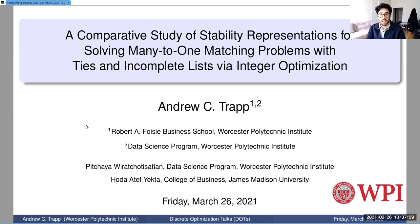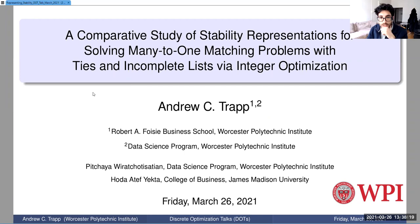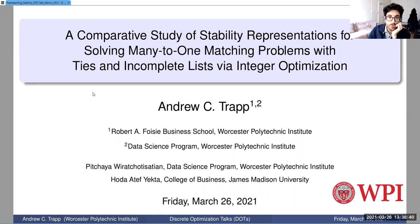Our second speaker for today is Professor Andrew Trapp from Industrial and Operations Engineering at the Western Polytechnic Institute in Massachusetts. He holds a PhD from the University of Pittsburgh and is known for his research at the intersection of operations research, analytics, and humanitarian systems, tackling problems such as refugee resettlement and countering human trafficking. His research has been funded by the National Science Foundation, and his work has appeared in venues such as Operations Research, INFORMS Journal on Computing, and EJOR. Today he's going to tell us about a matching problem which seems to arise repeatedly in these applications and how to tackle it best.